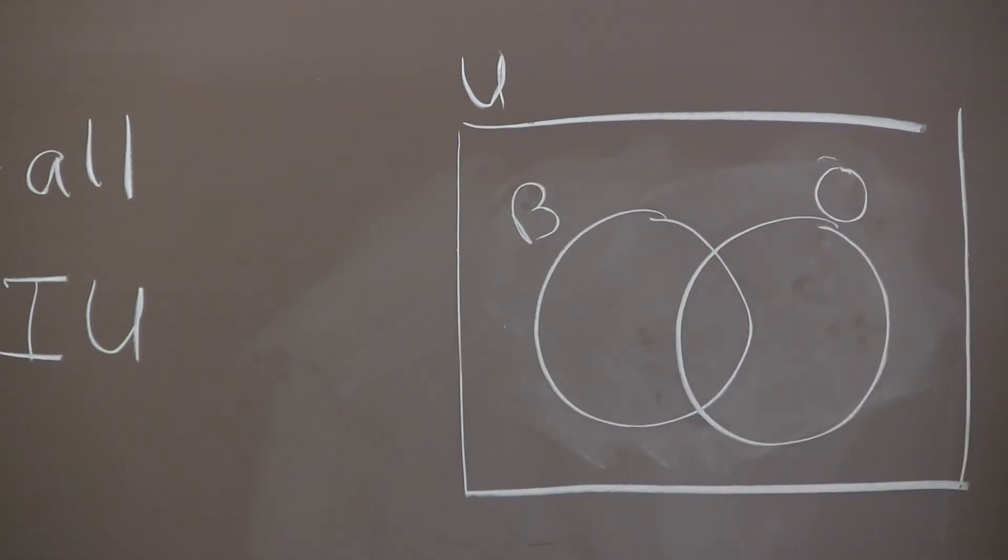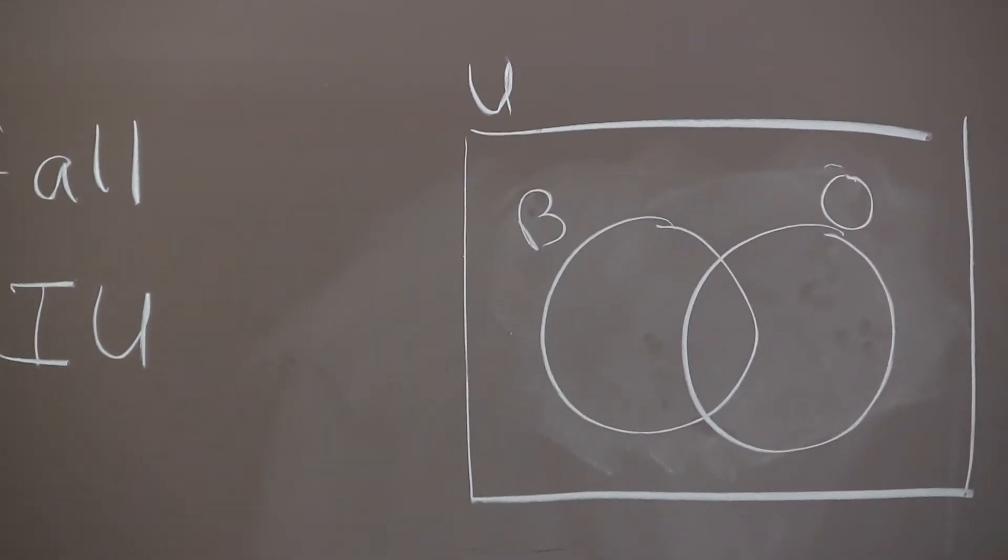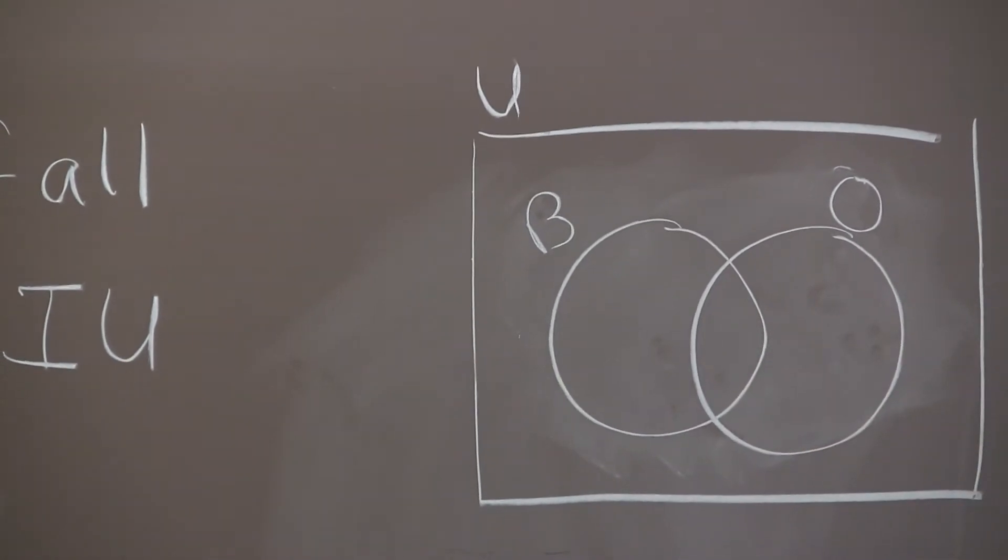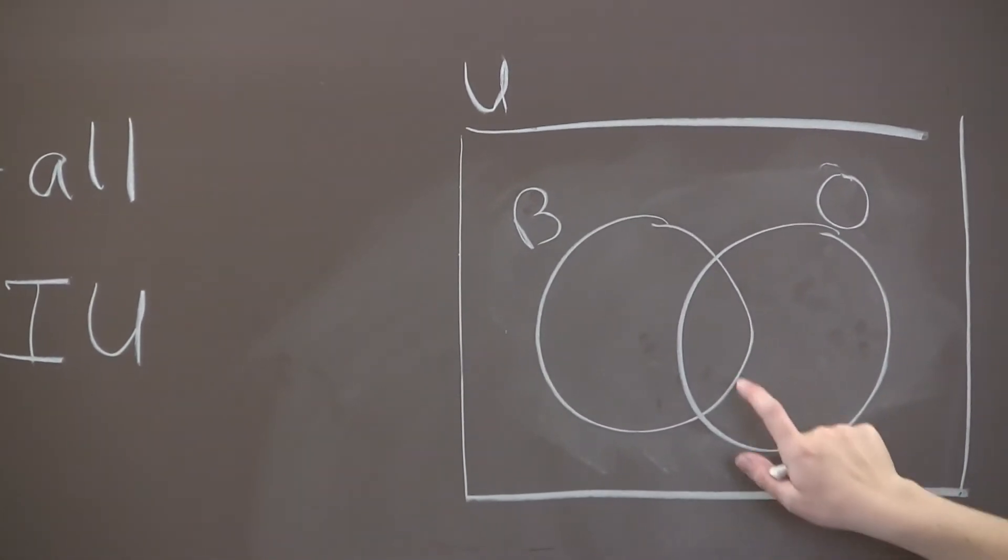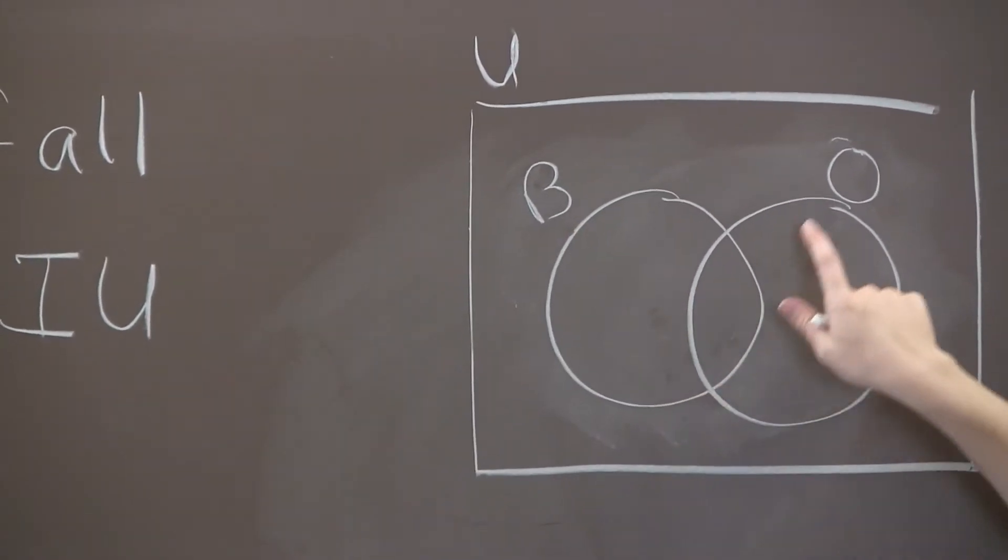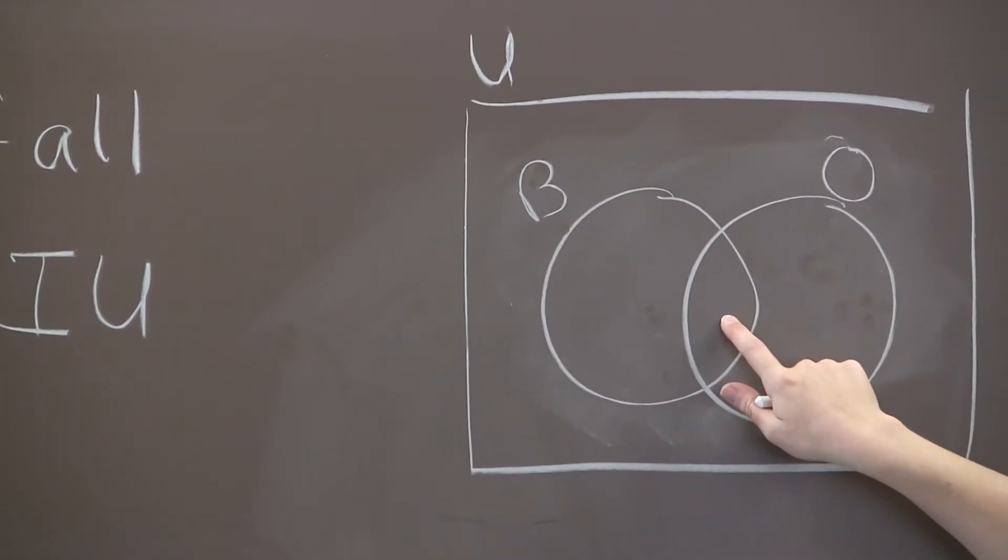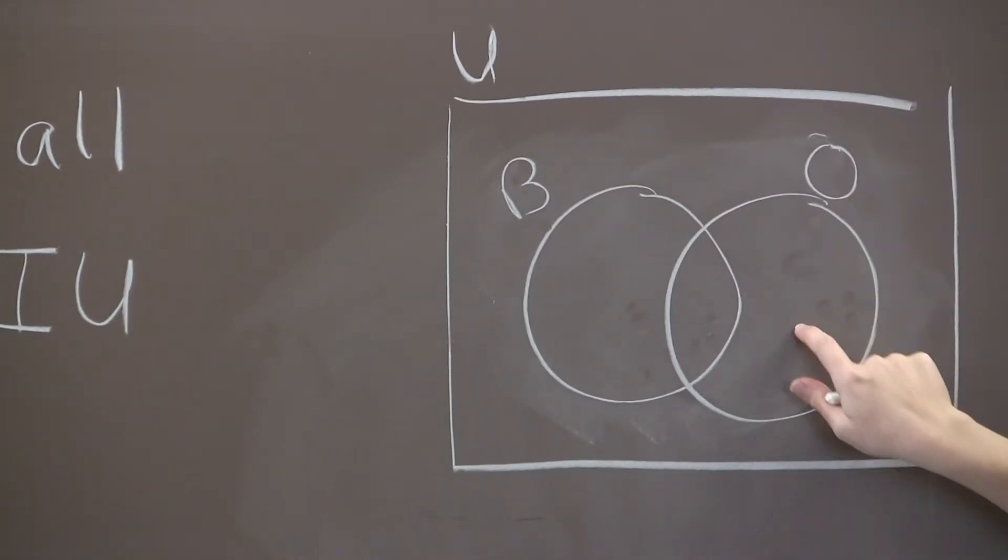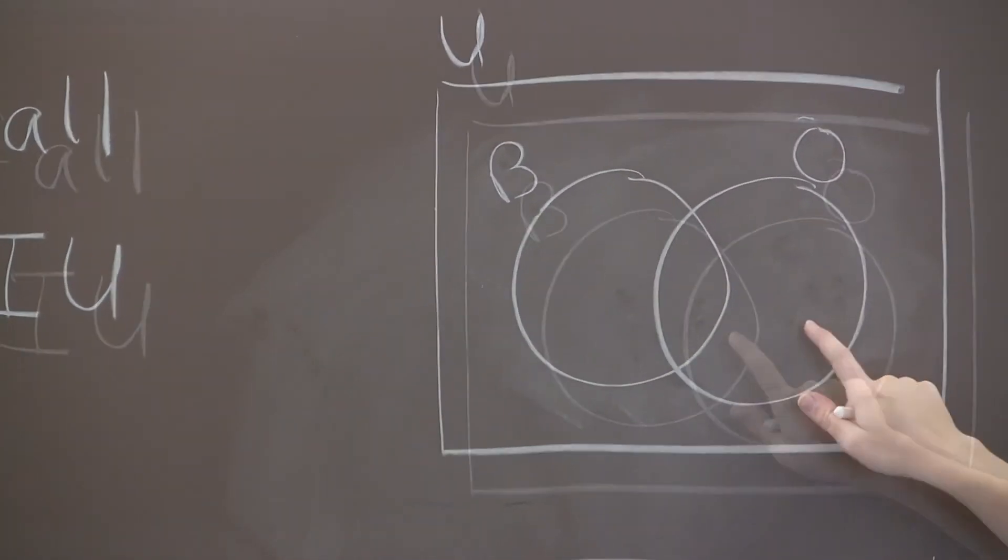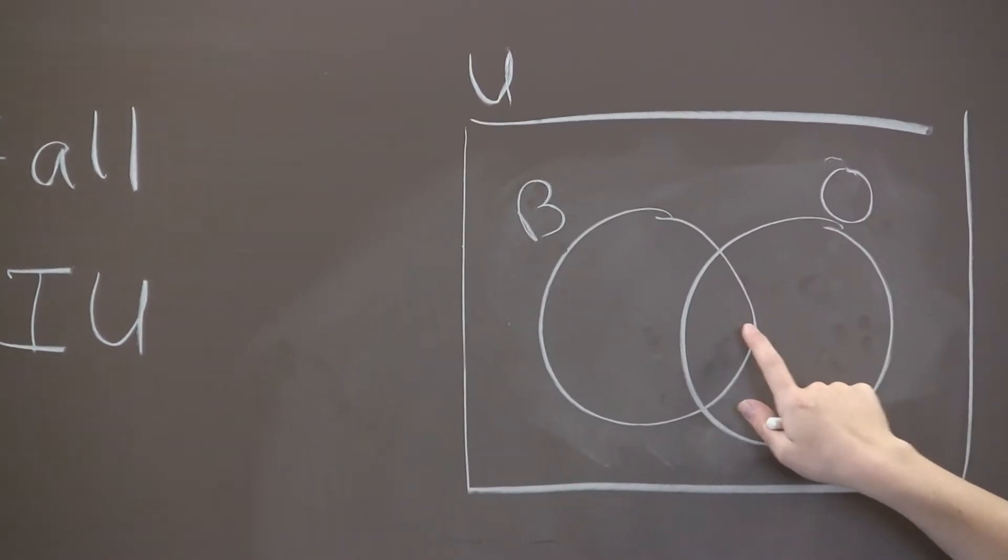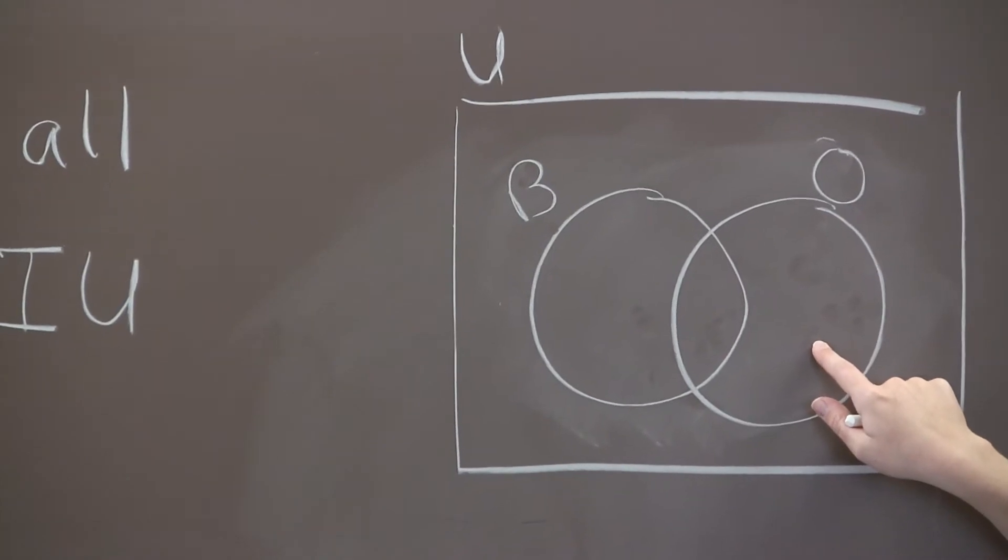We'll draw the set O like this, the set of IU students who live out of state. We need to draw it so it has some overlap with B but isn't completely overlapped with B. Here's why. This middle region would be a student who can major in business and who lives out of state, and that can definitely happen. But this region right here represents out-of-state students who don't want to major in business. There can be students who want to major in business and live out of state, and there can also be out-of-state students who don't want to major in business.